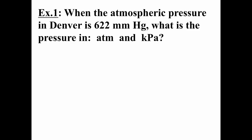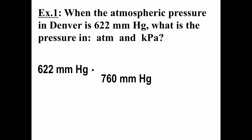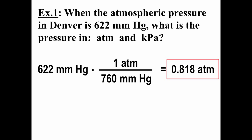Let's try a simple pressure conversion. In Denver, where atmospheric pressure is lower than at sea level, on a typical day it might be 622 millimeters of mercury. We look up the conversion factor — 760 millimeters of mercury equals one atmosphere — and that gives us 0.818 atmospheres for the atmospheric pressure in Denver under these conditions.